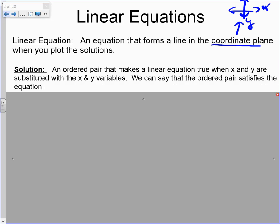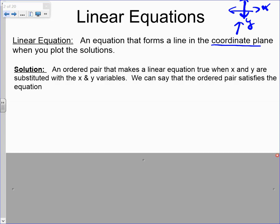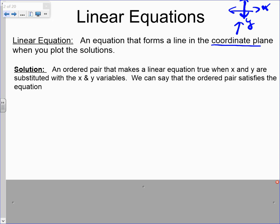Okay, next word. Last one for the day. Solution. An ordered pair that makes a linear equation true when x and y are substituted with the x and y variables. We can say that the ordered pair satisfies the equation. That should ring a bell of familiarity. Remember solutions satisfy? That hasn't gone away. Now we're dealing with a two-variable equation, and the word solution means the same thing. But now we have two numbers that satisfy instead of one. Let me explain.